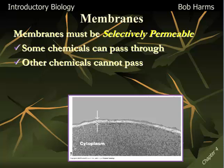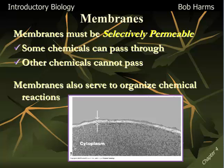In addition to this function of exchange and being selectively permeable, we also see that membranes are associated with a lot of chemical reactions — oftentimes a lot of the metabolism of a cell might be associated or connected to membranes. We'll take a look at the permeability and the organization issues throughout the next chapter that talks about the working cell.